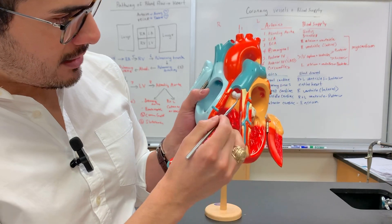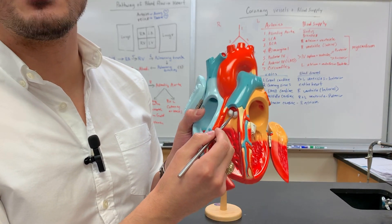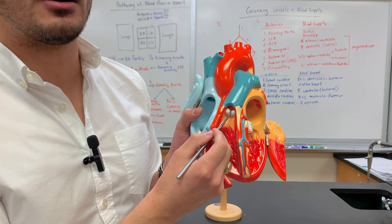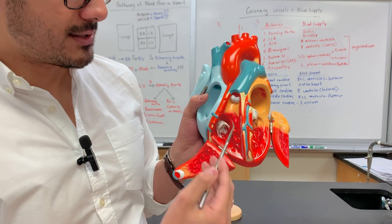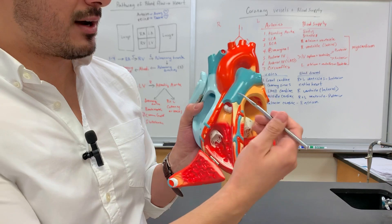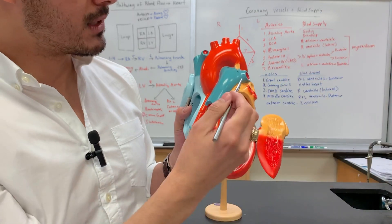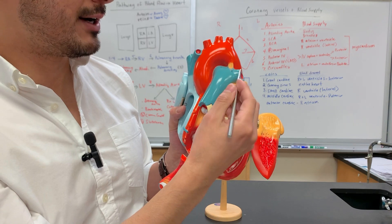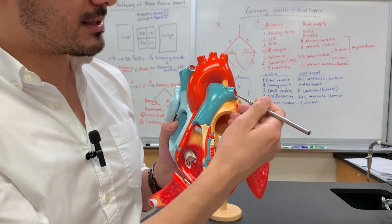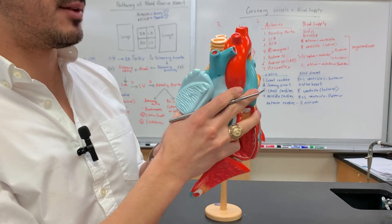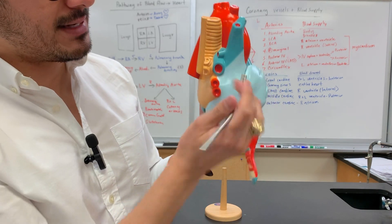This is the pulmonary semilunar valve. Deoxygenated blood goes from here up into the pulmonary trunk because we're trying to get it to the lungs. This is a pulmonary artery because arteries go away from the heart — this is the left one and the right one comes around on the back side, right here underneath the azygous vein.